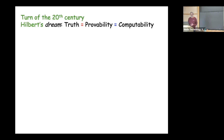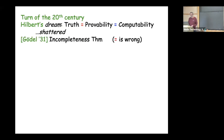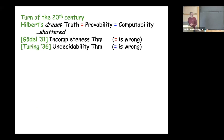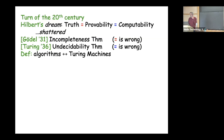A more recent point, just a century ago, is Hilbert's dream. He believed that truth in mathematics is the same as provability, and that algorithms for finding proofs could be automated. As you all know, this was shattered — first by Gödel, who showed the first equation is wrong, and then by Turing, who showed the second one is wrong. Turing gave the first formal definition of algorithms.